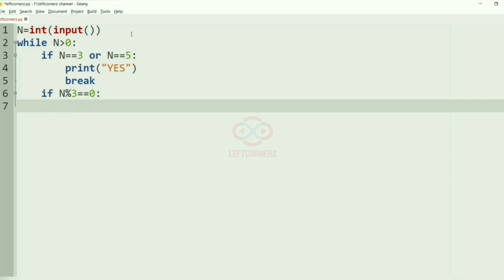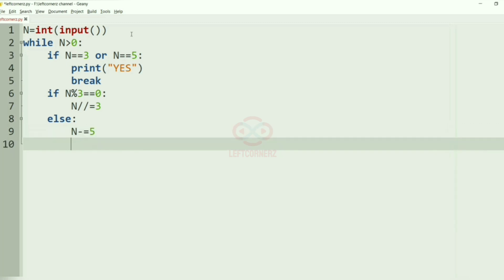If N mod 3 is equal to 0, then N will be modified as N double slash equal to 3. And else, N will be minus equal to 5.